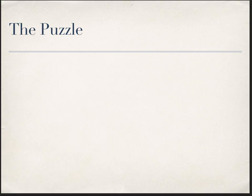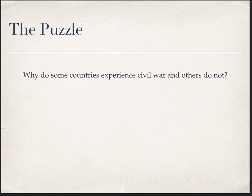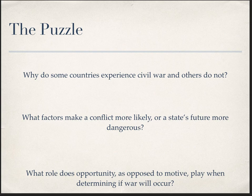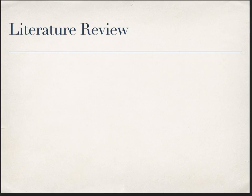We'll start with the puzzle, which is relatively simple: why do some countries experience civil war and others don't? Put a different way, what factors make a conflict more likely or a state's future more dangerous? And in the context of the paper itself, what role does opportunity as opposed to motive play when determining if a war will occur? The literature review here is relatively simple — there wasn't a lot of writing on this before Collier and Hoffler started up.